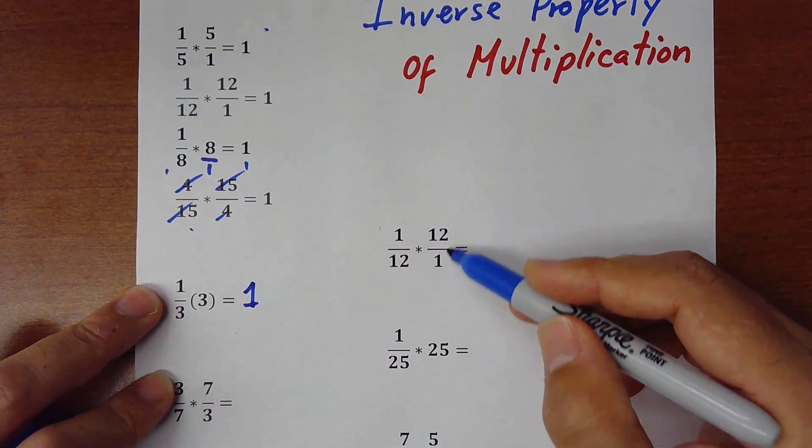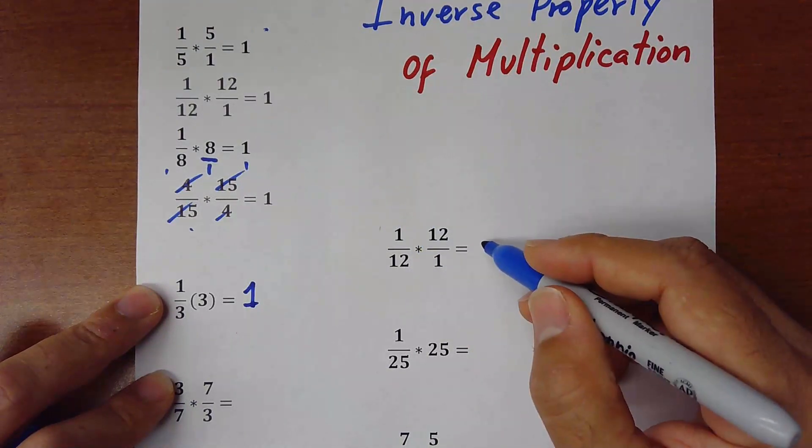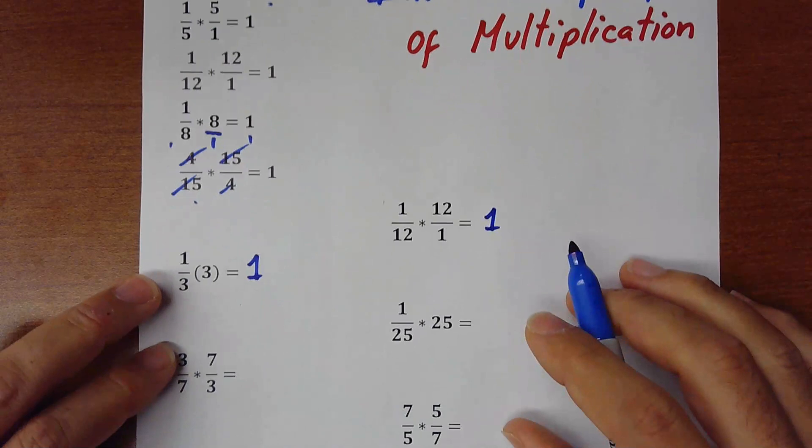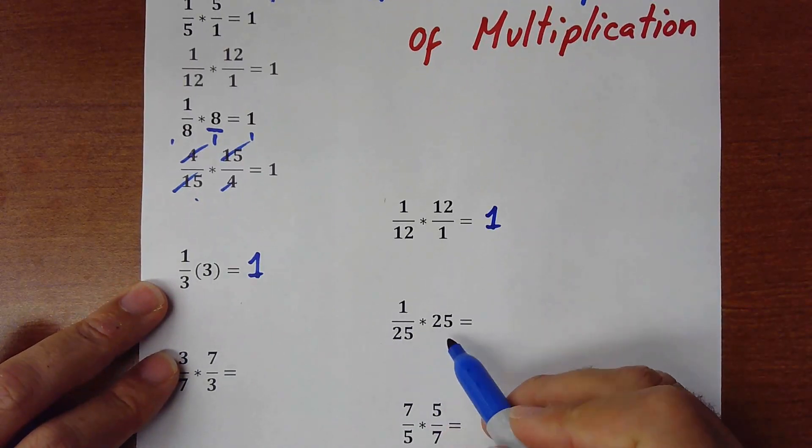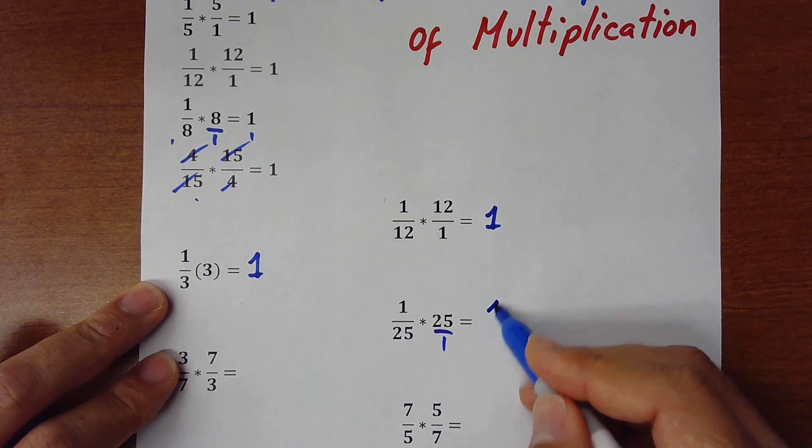Here 1 over 12, 12 over 1. We had it in the example. The answer would also be 1. Here the same. This 25 is like 25 over 1. It's the inverse. So the answer would be 1.